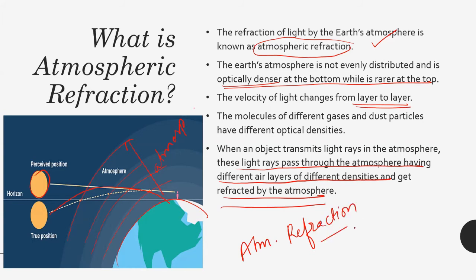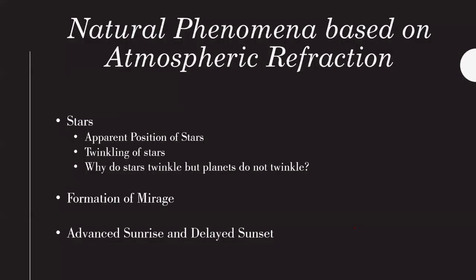Now there are many different phenomena which are as a result of atmospheric refraction. These are stars - the twinkling of stars. We know we see stars twinkling at night. The apparent position of the star - to our surprise, what we see, the position that we see of a star, is not the actual position. It is just an image, it is just an apparent position of that star.